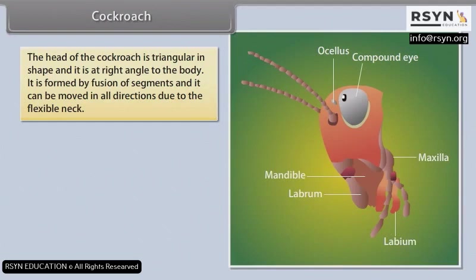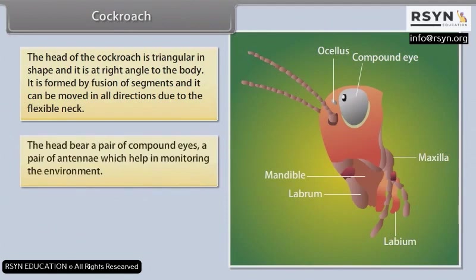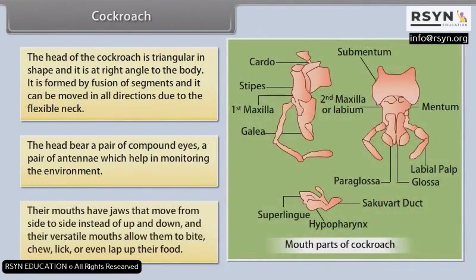The head bears a pair of compound eyes and a pair of antennae which help in monitoring the environment. Their mouths have jaws that move from side to side instead of up and down. Their versatile mouths allow them to bite, chew, lick or even lap up their food.